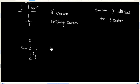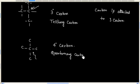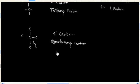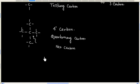Now this carbon is called 4 degree carbon, or quaternary carbon. This is also called neocarbon. In this case, carbon is attached to 4 carbons.